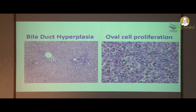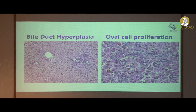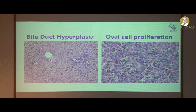This is to show bile duct hyperplasia. It is a very important lesion — if any compound is showing bile duct hyperplasia then the compound may not go further. Similarly, oval cell proliferation can also be seen here. These are the stem cells in rodents which serve as stem cells for hepatocytes. Bile duct hyperplasia and oval cell proliferation usually occur together.